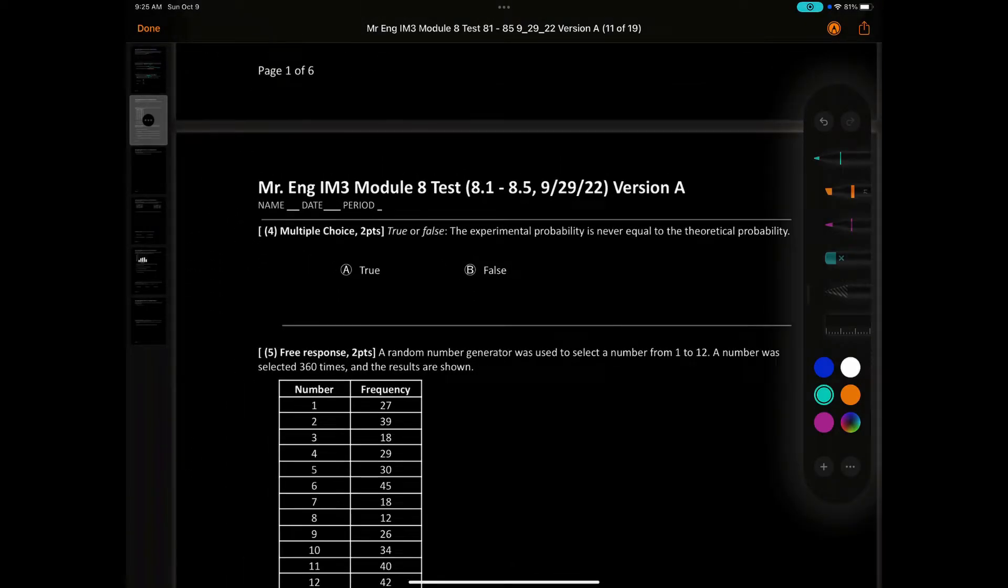Question number 4. True or false? The experimental probability is never equal to the theoretical probability. The answer for this one would be false. It is possible it happens. Remember, the theoretical is like probability of heads, that's going to be 50%. If you flip the coin and it gets heads and you do it one time, that's 50%. So they do match and that can happen.